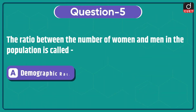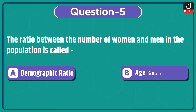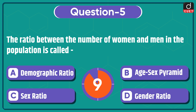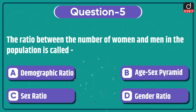Next question: the ratio between the number of women and men in the population is called — demographic ratio, age-sex pyramid, sex ratio, or gender ratio? The correct answer is option C, sex ratio.